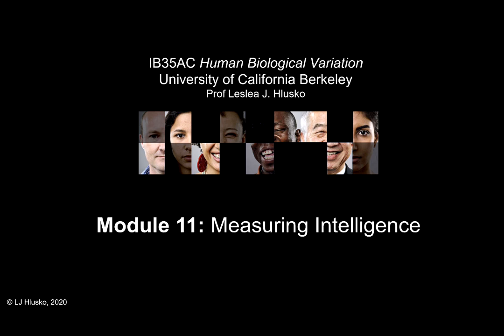In Experience 3, you were introduced to Samuel Morton, who in the mid-19th century was measuring cranial capacity — the volume within a skull — with the assumption that small differences in cranial capacity corresponded to differences in intelligence. For Experience 4, we have stepped into the post-Civil War era. At the end of the 19th century and early part of the 20th century, American psychologists adopted the new idea of particulate inheritance and applied it to human intelligence.